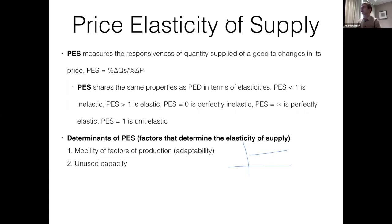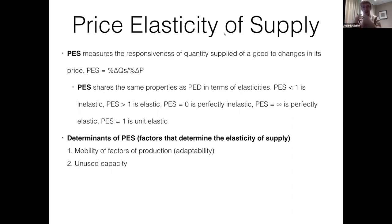The second determinant is unused capacity. If you have a factory with tons of space not being used, or workers not employed to their full capability, you can quite easily expand your production into this unused capacity. From one day to the next, you can dramatically increase your quantity supplied. This implies a very elastic supply curve, because you can change your quantity supplied extremely easily. So both more adaptable resources and unused capacity lead to higher elasticity of your supply curve.